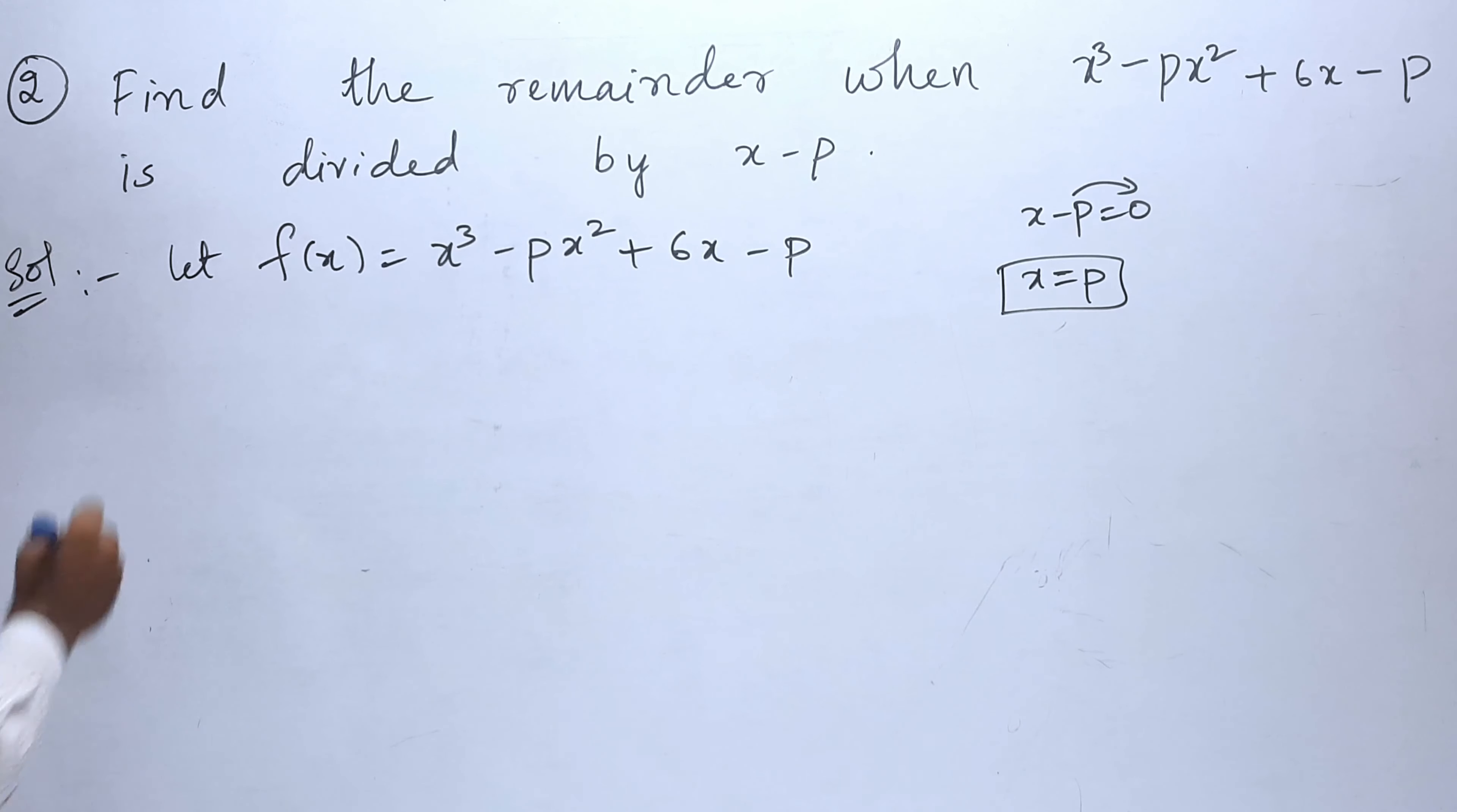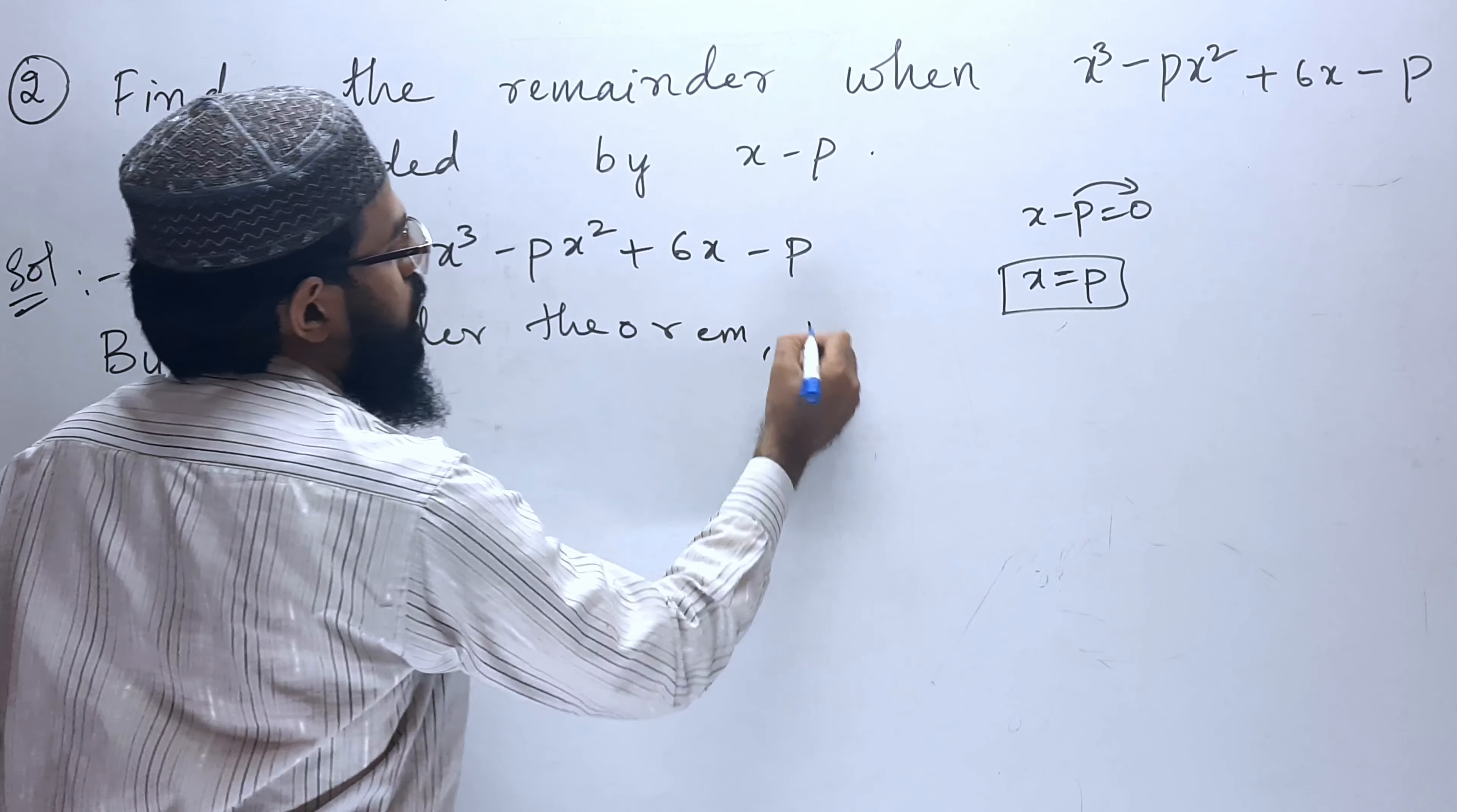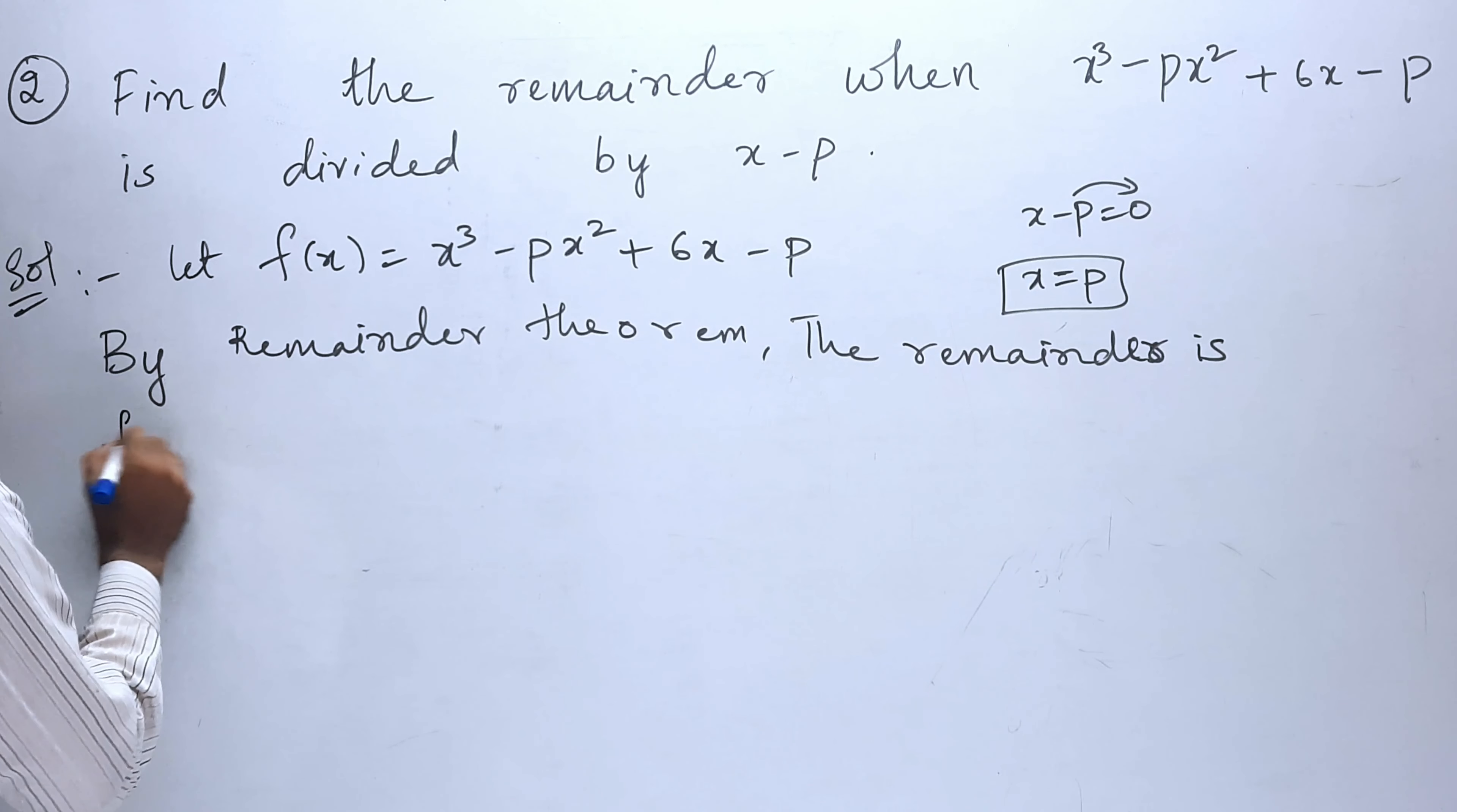So, by remainder theorem, the remainder is f of p.